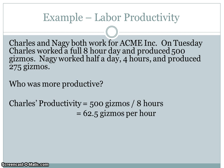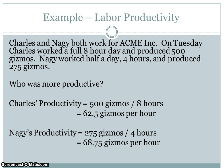For Charles, his output was 500 gizmos and it took him eight hours, so on average he produced 62.5 gizmos per hour. Nagy's output was 275 gizmos and his input was four hours, so he produced 68.75 gizmos per hour. So in absolute terms, while Nagy only produced 275 gizmos, he was more productive than Charles because he made more gizmos per hour.